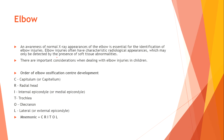Elbow. Awareness of normal x-ray appearances of the elbow is essential for identification of elbow injuries. Elbow injuries often have characteristic radiological appearances which may only be detected by the presence of soft tissue abnormalities. There are important considerations when dealing with elbow injuries in children regarding ossification center development. The ossification centers are: capitulum, radial head, internal (medial) epicondyle, trochlea, olecranon, and lateral (external) epicondyle — mnemonic: CRITOE.